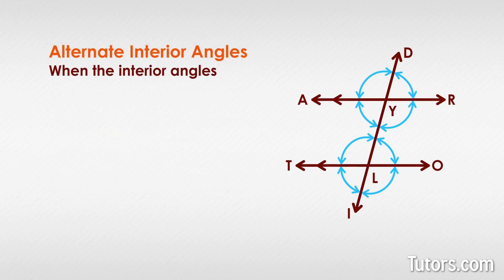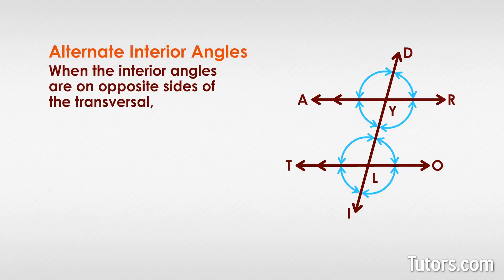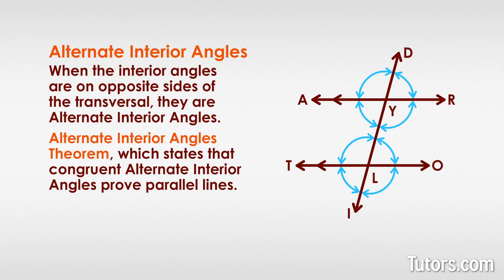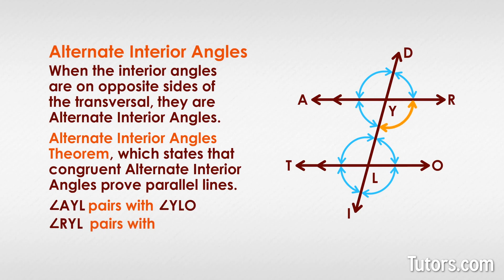When the interior angles are on opposite sides of the transversal, they are alternate interior angles. They lend themselves to the alternate interior angles theorem, which states that congruent alternate interior angles prove parallel lines, much as the alternate exterior angles theorem did. In our figure, angle A-L-Y is the alternate interior angle for angle Y-L-O, making them congruent. And angle R-Y-L pairs off as the alternate interior angle of angle T-L-Y.